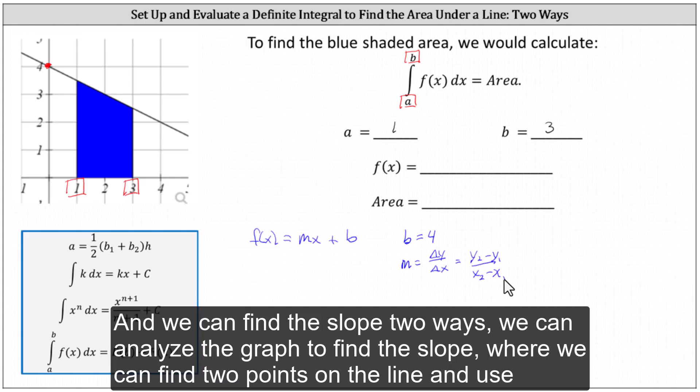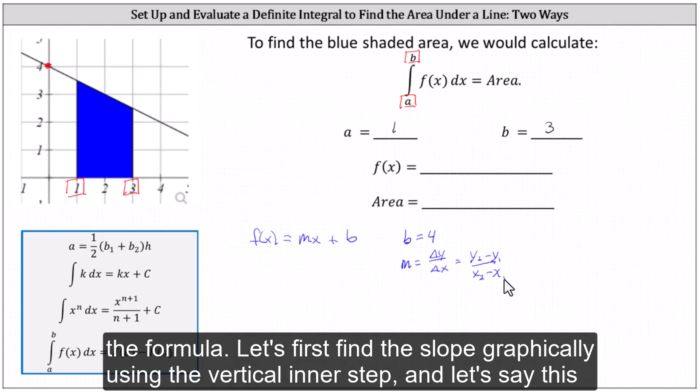And we can find the slope two ways. We can analyze the graph to find the slope, or we can find two points on the line and use the formula.